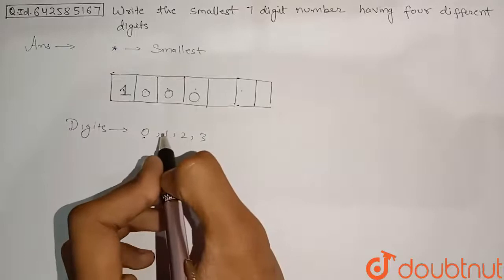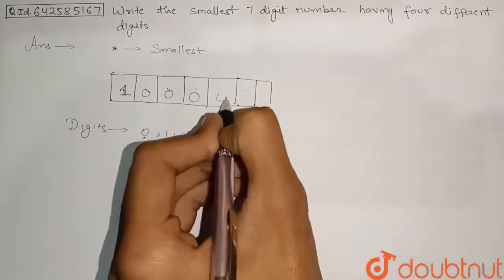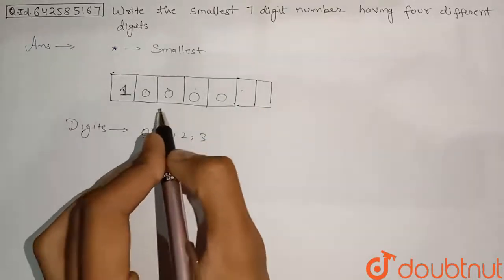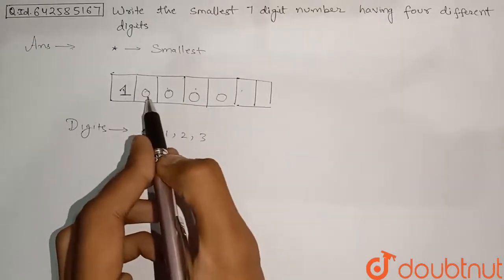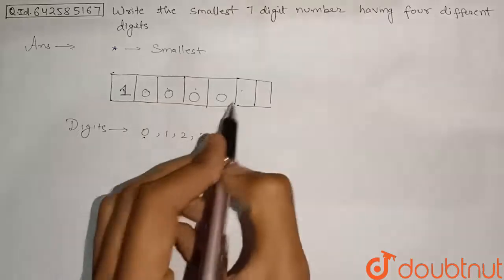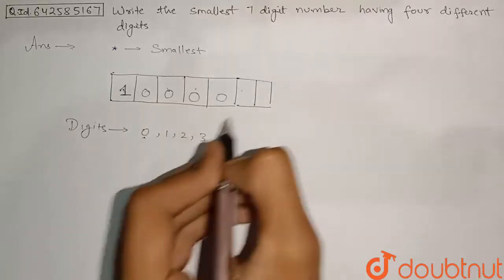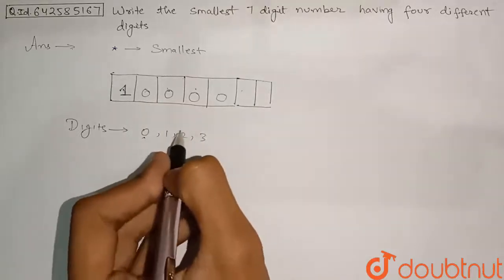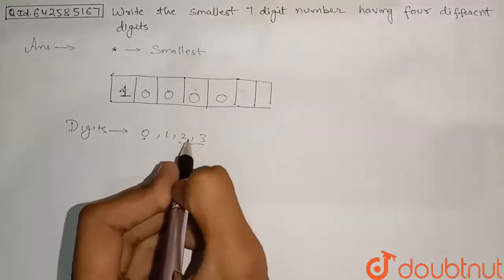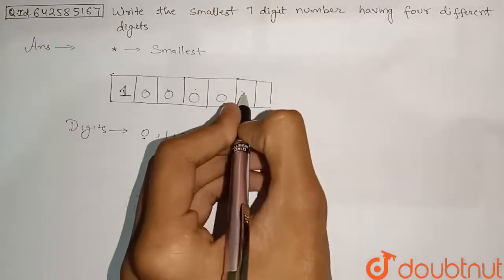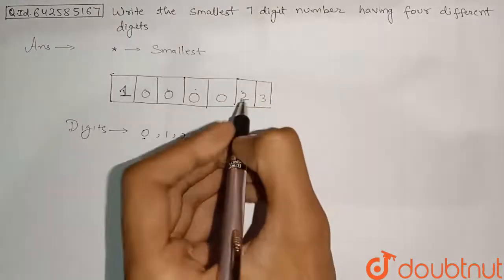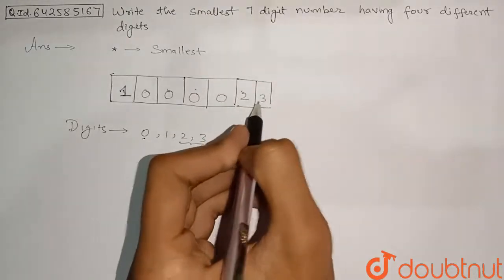Now we have to think that there will be 4 different digits also in this number. Now 1 digit is this, 1 digit is this 0, and 2 different digits should be put in. So this 2 and 3. So now we have to just choose a number out of this 2 and 3 for these 2 blocks. So we can just put this 2 here and this 3 here such that this 23 is smaller than 32.